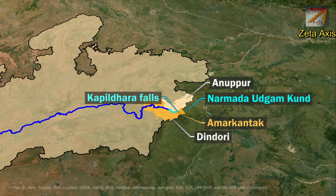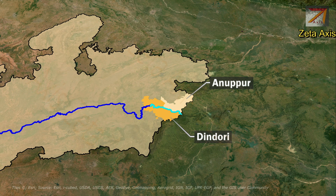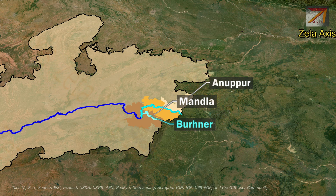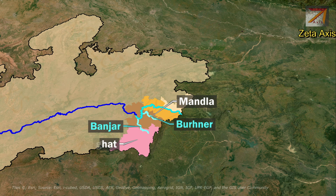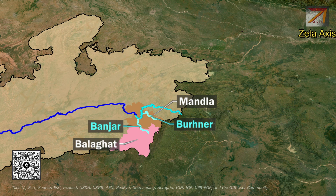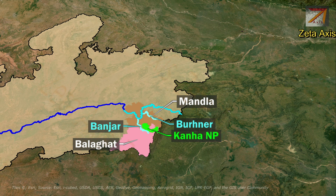The Narmada river flows through Dindori district and enters Mandla district, where it meets the Burna river, which originates and flows within Mandla district. Within Mandla, the Banjar river also meets the Narmada. The Banjar river originates in Balaghat district near the Chhattisgarh boundary and passes through Kanha National Park.